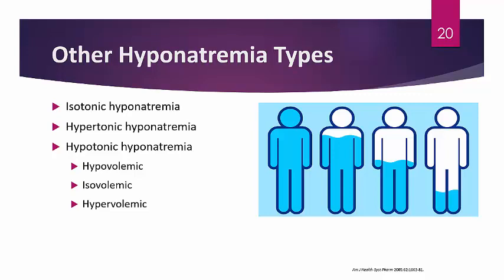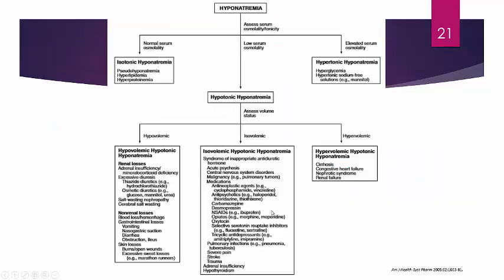Now for the main hyponatremia types. Hyponatremia is diagnosed first by tonicity or osmolality. We have isotonic hyponatremia, hypertonic hyponatremia, and hypotonic hyponatremia. Within hypotonic hyponatremia, there are three subtypes: hypovolemic, isovolemic, and hypervolemic.